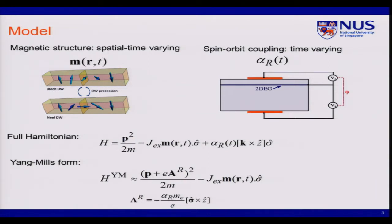On the right, we have a spin-orbit coupling that is a Rashba type. Now the Rashba spin-orbit coupling can also be modulated by some gate voltage. So now we got a spatial time-varying magnetic structure and we got a time-dependent Rashba coupling. So combined the two systems.